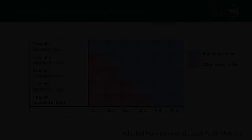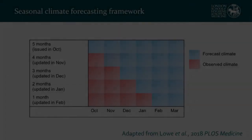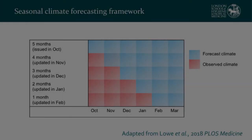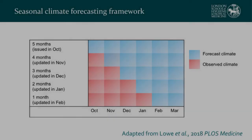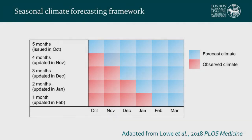We're now able, up to six months in advance, to start predicting the risk of dengue using open-source seasonal climate forecast information.